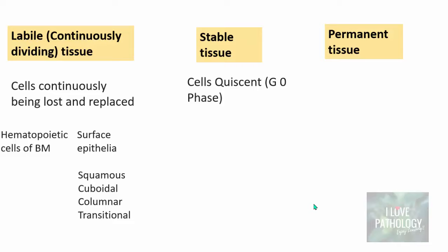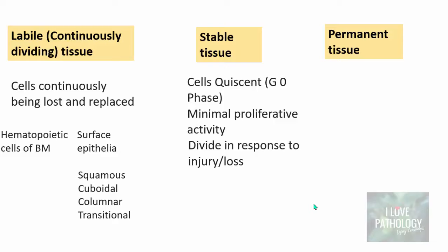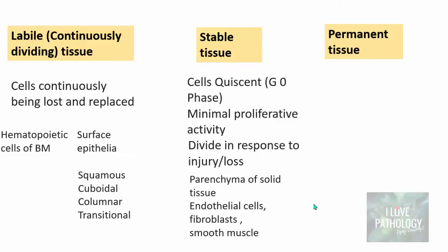Stable tissue is tissue where cells are quiescent — they are in the G0 phase of the cell cycle. Stable tissues have cells with very minimal proliferative activity; they can proliferate only in response to injury or loss of cells. Examples include the parenchyma of solid tissues like the liver, kidney, and spleen, as well as endothelial cells, fibroblasts, and smooth muscle cells.